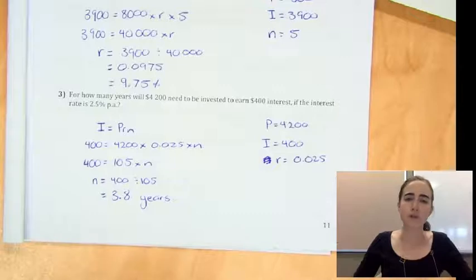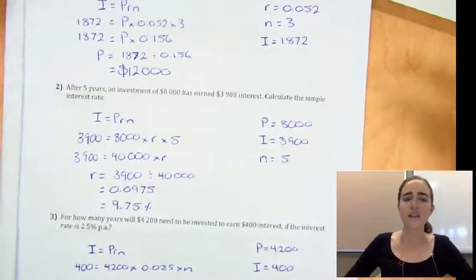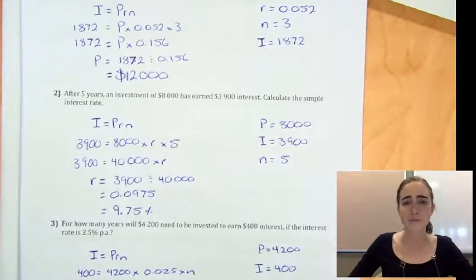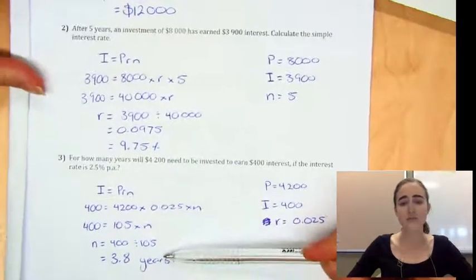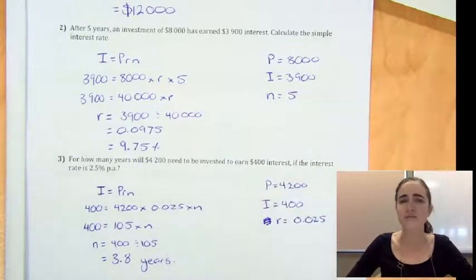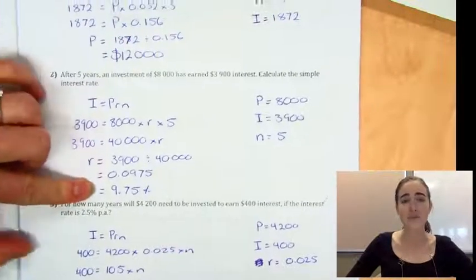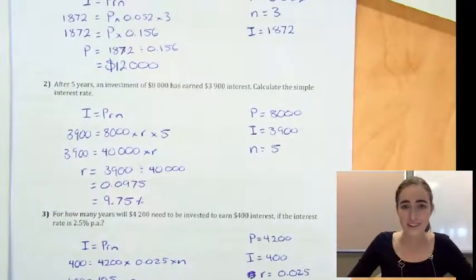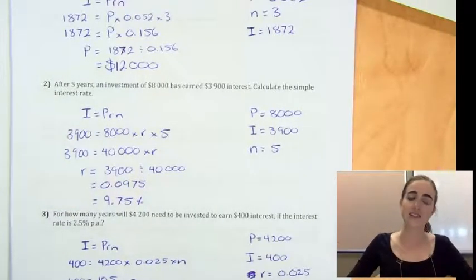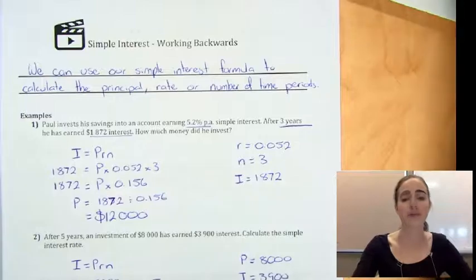So it's always important when we're doing questions like this that we look back at the answers we've got and decide whether they make sense, whether they're reasonable. If we ended up with something like 200 years, that's not really reasonable for somebody to invest money for. Or if we had a rate and we ended up with something like 4,000%, again, that doesn't really make sense. So we're always looking to see how reasonable our answers are. So that's a few examples of simple interest problems where we need to work backwards.